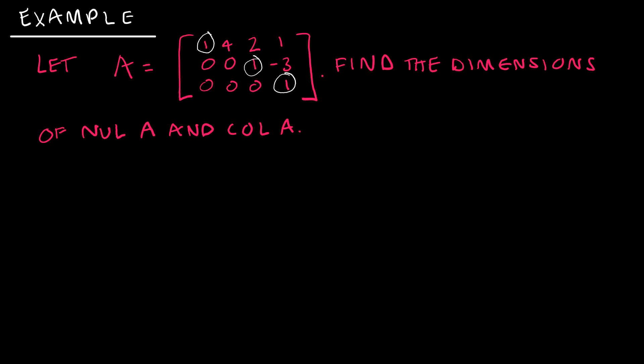But here's what I know. I know that I have three pivot columns. I also know that this is a free variable. So what does that tell me? That means that the dimensions of the null space of A, the dimension of the null space of A is the number of free variables in the equation.